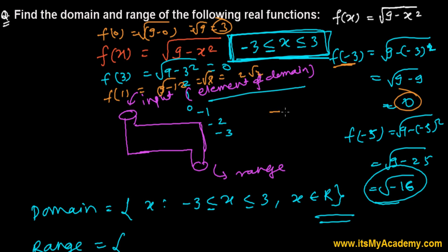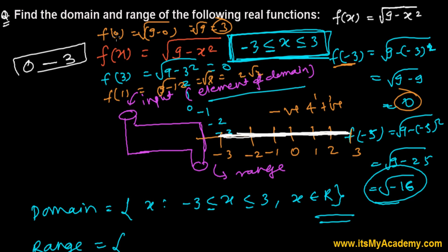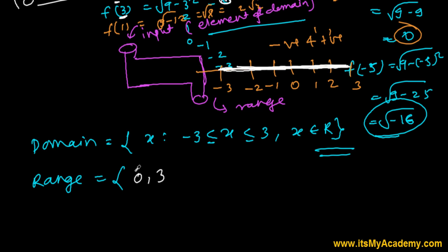Whether you put negative or positive numbers between -3 and 3, your output will always be between 0 and 3. When you put 0 you get the maximum value of 3, and when you put ±3 you get the minimum value of 0. So the range is [0, 3], including both 0 and 3.